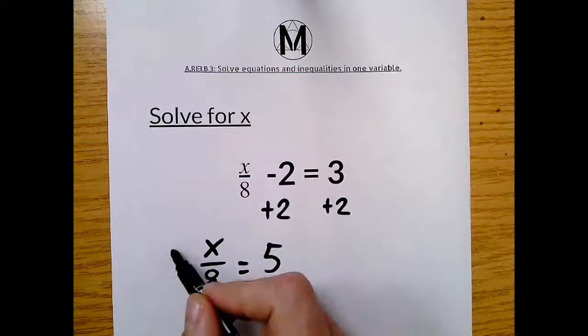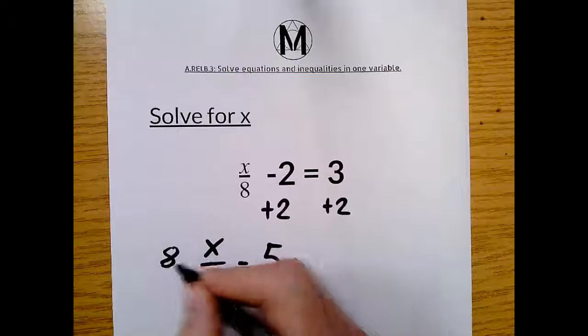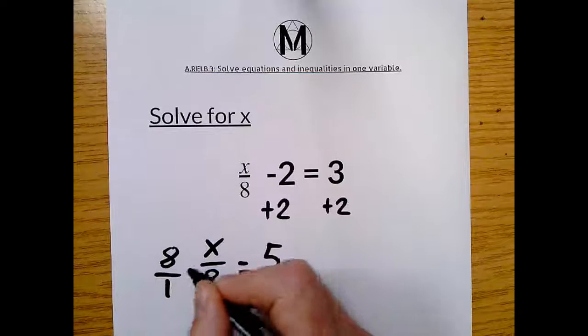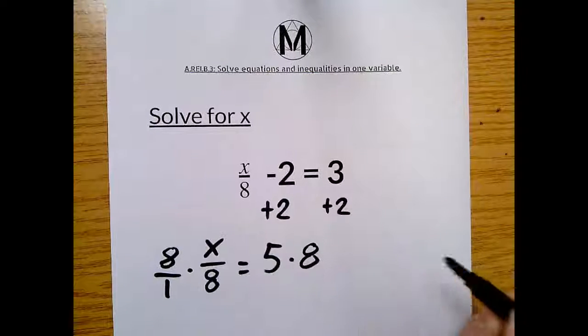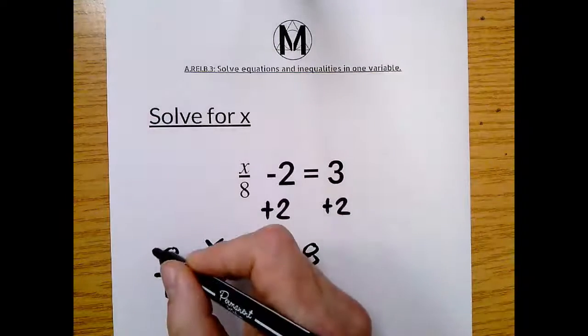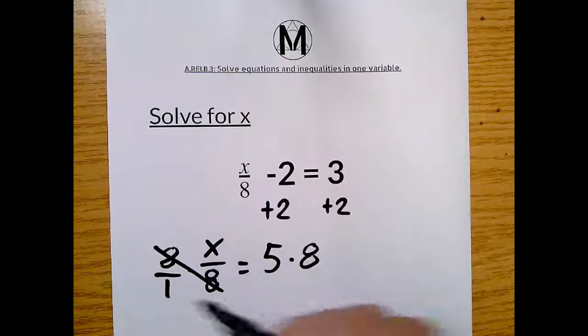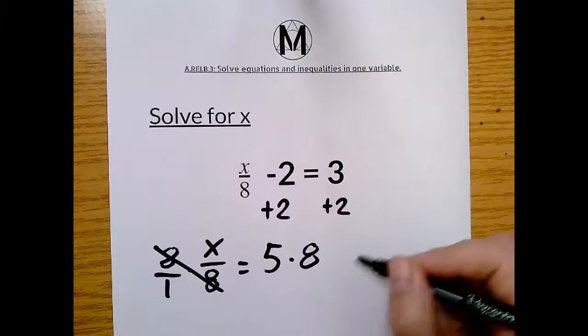Now I'm going to multiply this side by 8, but I'm actually going to write it as a fraction because it's just 8 over 1. It's the same thing. And then I'll multiply this side by 8. Okay. So these 8s cancel. So x over 1 is just x. So I have x.